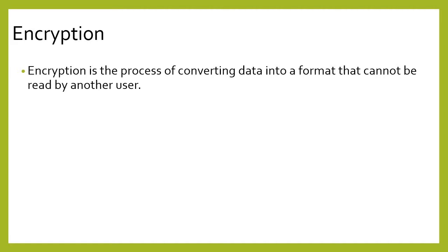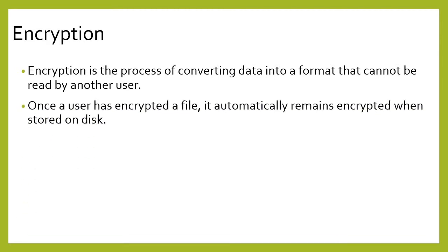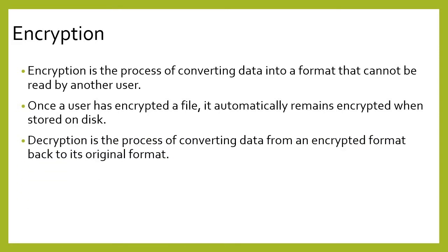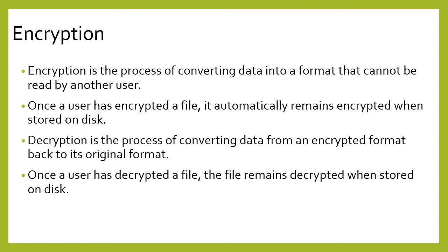Encryption is a process of converting data into a format that cannot be read by another user. Once a user has encrypted files, they automatically remain encrypted when stored on the disk. Decryption, on the other hand, is the process of converting that data from an encrypted format back to its original format. Once a user has decrypted a file, the file remains decrypted when stored on the disk.